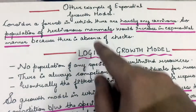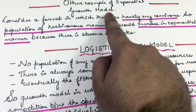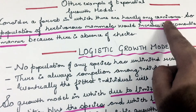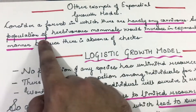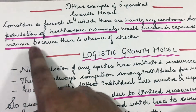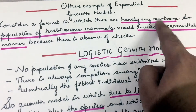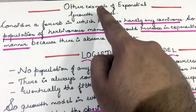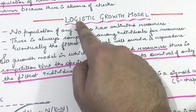Another example of the exponential growth model: consider a forest in which there are hardly any carnivores. Since there are very few carnivores, the population of herbivores in the forest would increase in an exponential manner. So a forest with hardly any carnivores, leading to rapid increase in the herbivore population, is another example of exponential growth.